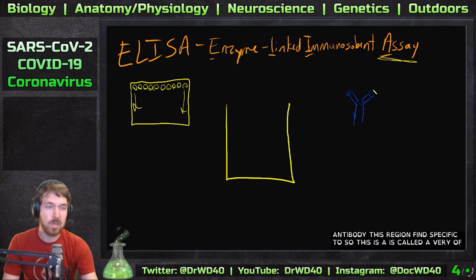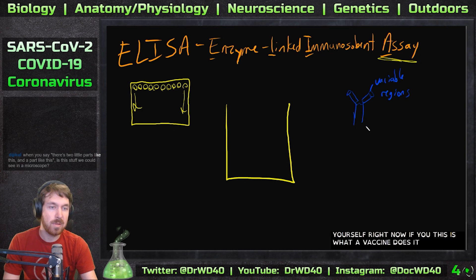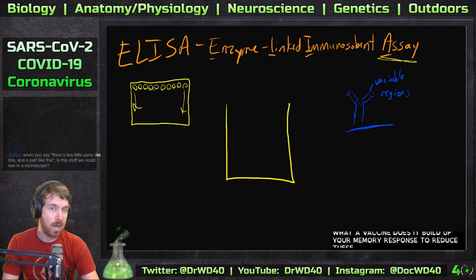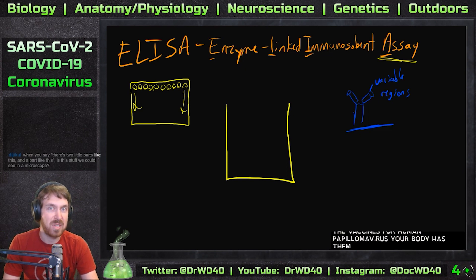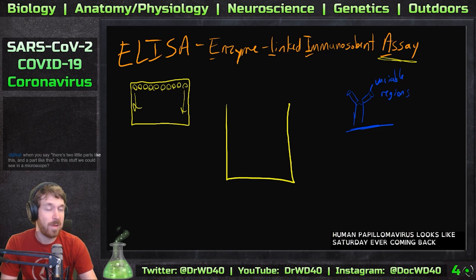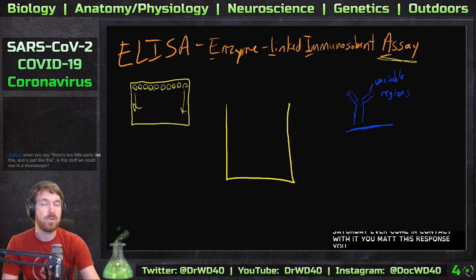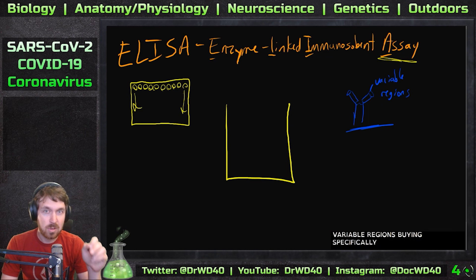This binding region is called the variable region. There are thousands of different antibodies floating around in your body right now. This is what a vaccine does — it builds up your memory response to produce antibodies against a particular infection. For example, the HPV vaccine gives your body memory cells that recognize human papillomavirus, so if you encounter it, you mass-produce antibodies and never get infected.